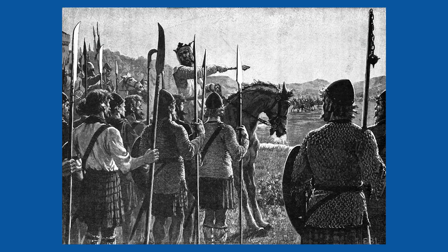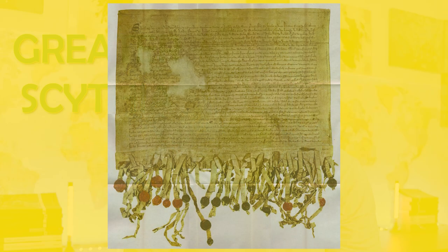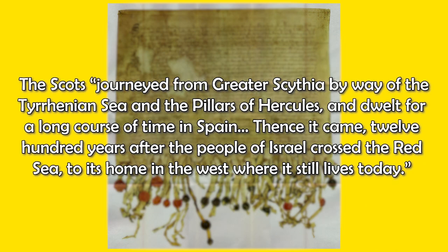In the 1320 Declaration of Arbroath — a letter signed by the Scottish nobility and sent to the Pope asking him to recognise Scotland's independence and Robert the Bruce as king — there is a curious reference to Greater Scythia. As the declaration states: 'The Scots journeyed from Greater Scythia by way of the Tyrrhenian Sea and the Pillars of Hercules, and dwelt for a long course of time in Spain. Thence it came, 1200 years after the people of Israel crossed the Red Sea, to its home in the west where it still lives today.' This origin story also references Spain, a region that appears in the story of Skota as well.